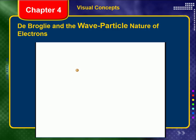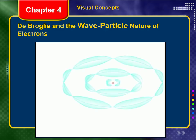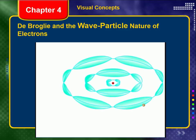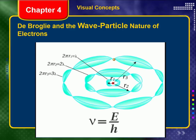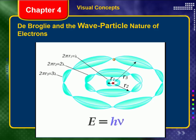In 1924, Louis de Broglie proposed that electrons, like light, had properties of both particles and waves. De Broglie suggested that electrons be considered waves confined to the space around an atomic nucleus, and that an electron would have a characteristic wavelength equal to Planck's constant divided by the momentum of the particle. It followed that the electron waves could exist only at specific frequencies equal to energy divided by Planck's constant. Three years after de Broglie's proposal, C.J. Davison and L. Germer discovered that electrons can be diffracted by a single crystal of nickel, providing the first experimental confirmation of de Broglie's theory.